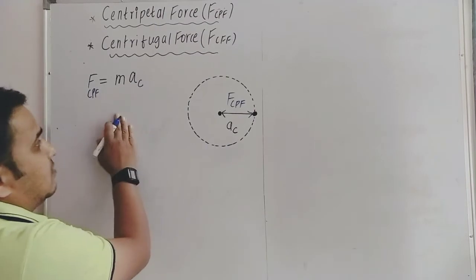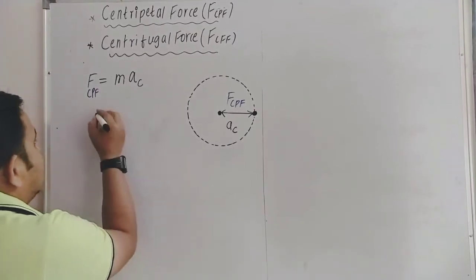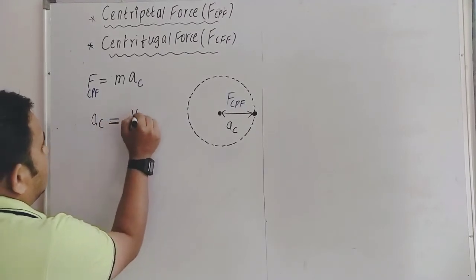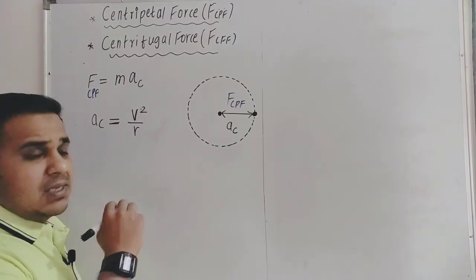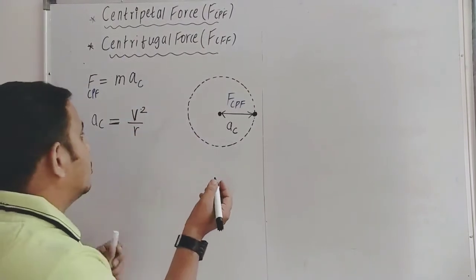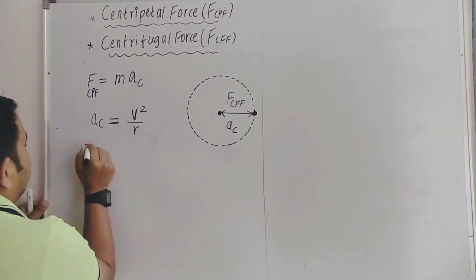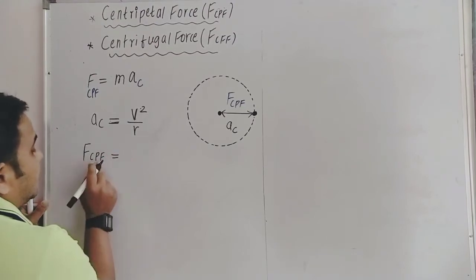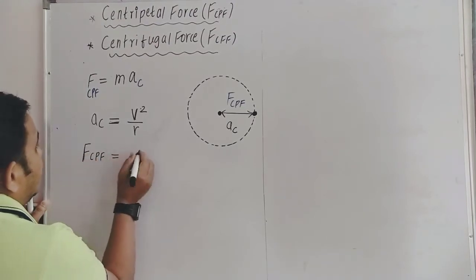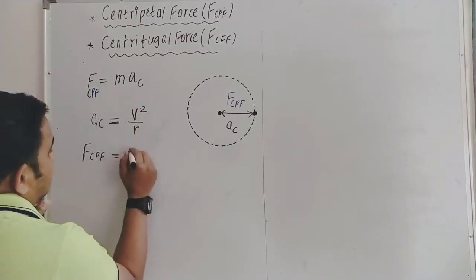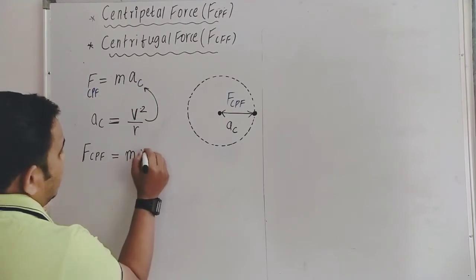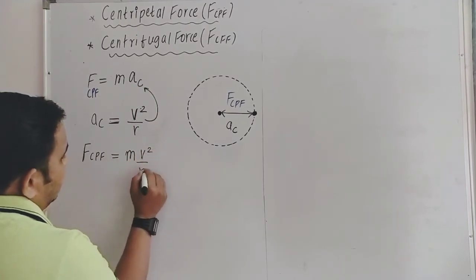This is how you write the equation. The centripetal acceleration magnitude, ac, is equal to v² divided by r. You can also write it as r·ω². So centripetal force — written as Fcpf — equals mass into ac, which gives mv²/r.